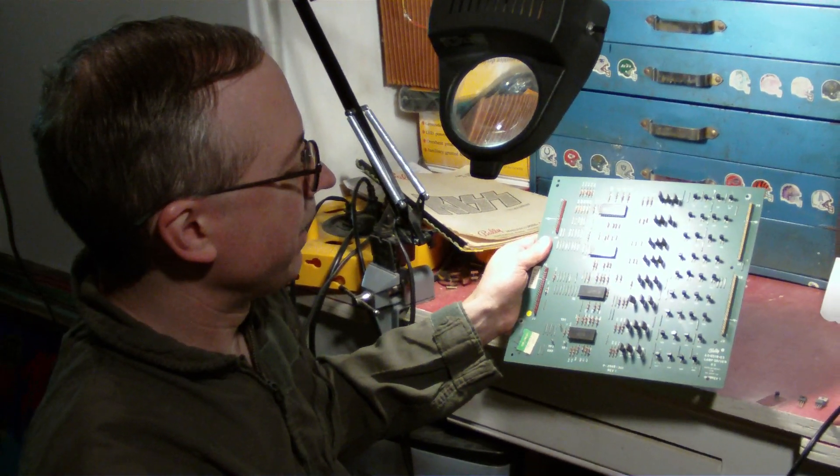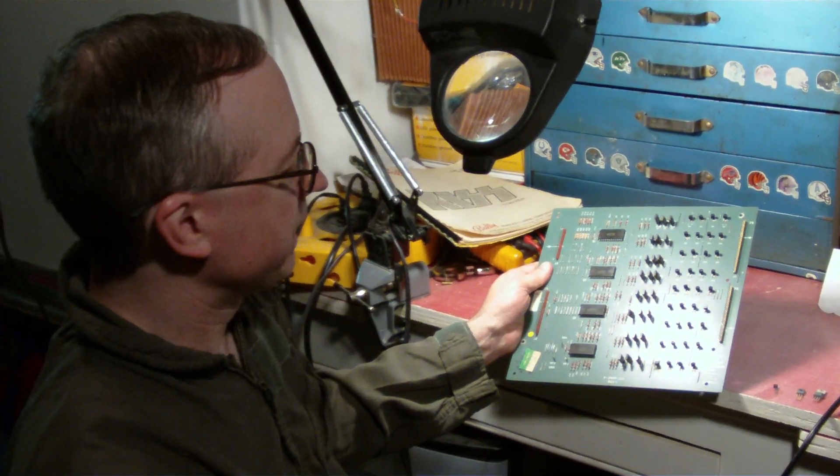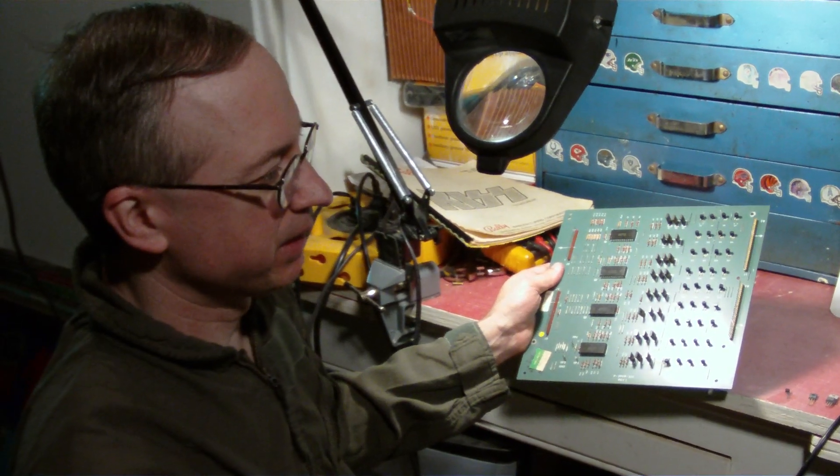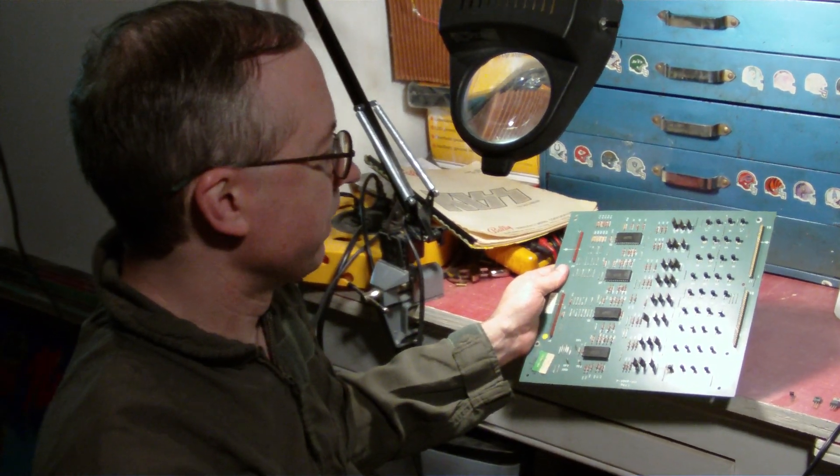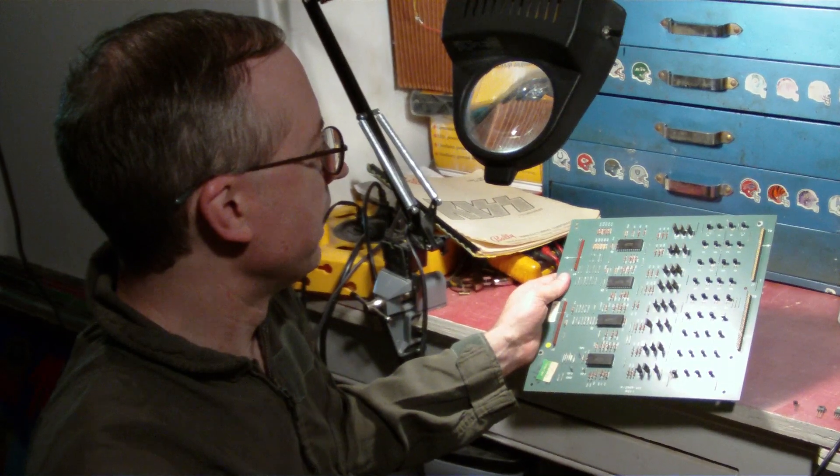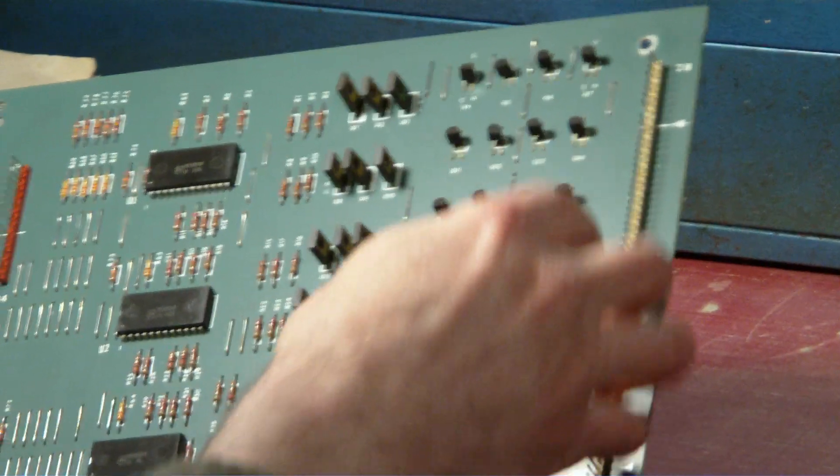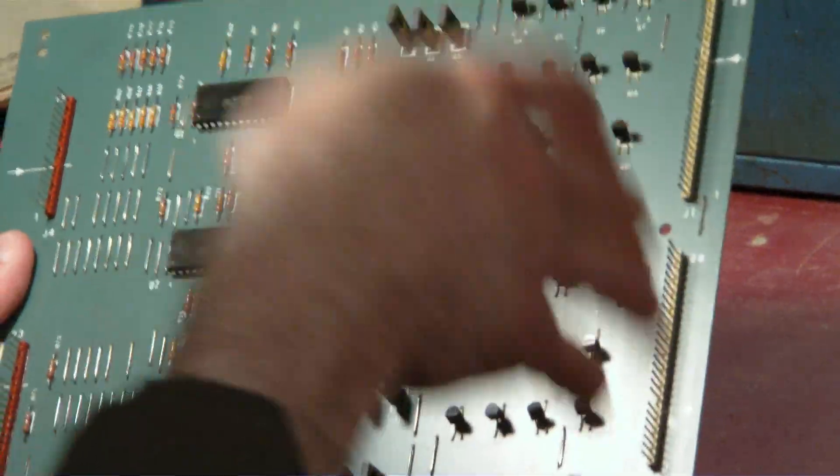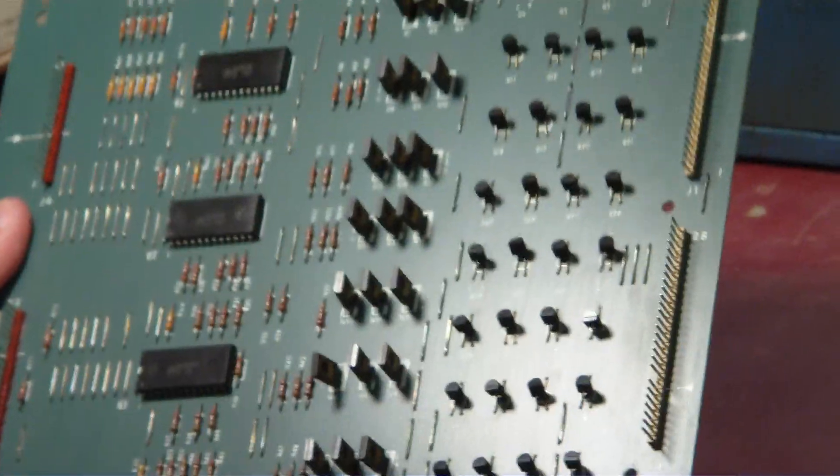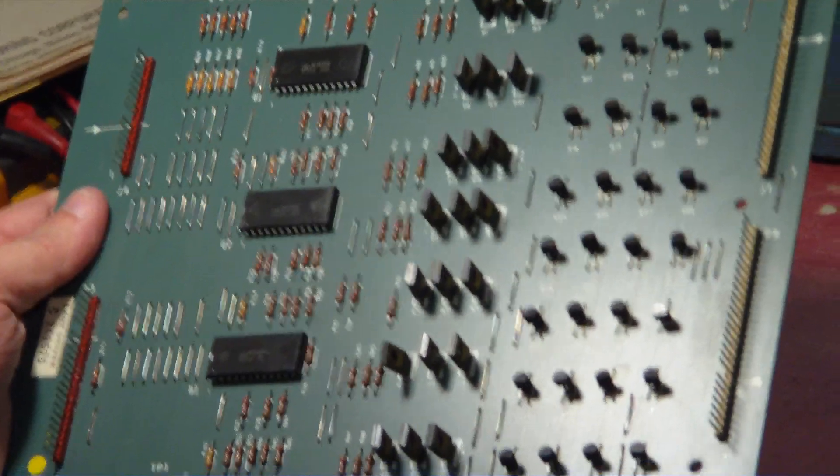But before you go that route, the first thing you want to look at is the lamp itself. Make sure the lamp is good. Make sure the lamp socket is okay because sometimes they're bent in funny ways. And then you want to check the connectors that plug into here. These connectors here usually don't fail, but the ones that plug in, the pins in there can snap off due to age or sometimes from acid damage.